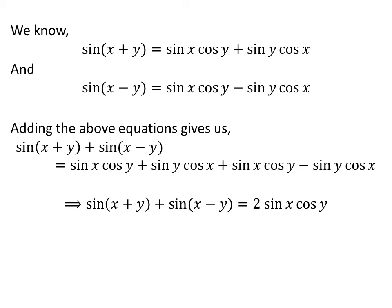Adding the like terms gives us sin(x + y) + sin(x - y) = 2 sin x cos y. Thus, we have proved the trigonometry identity.